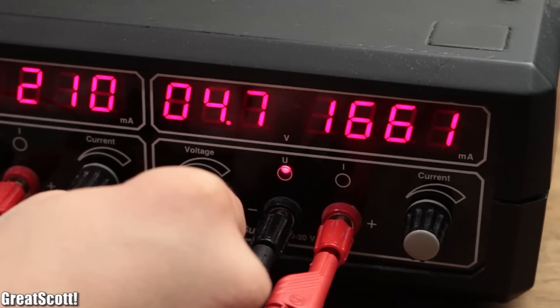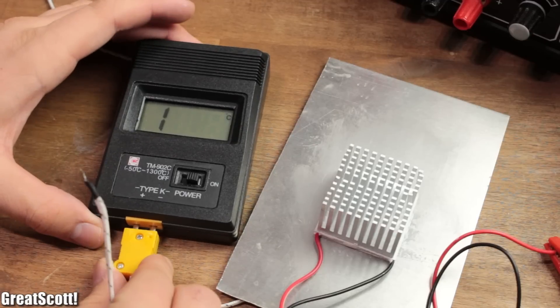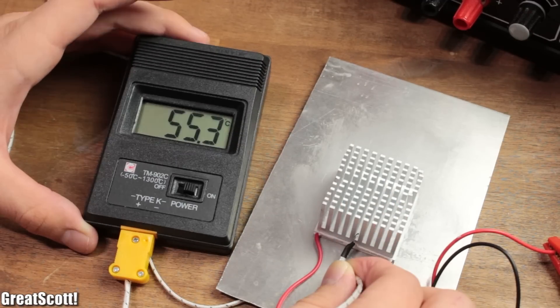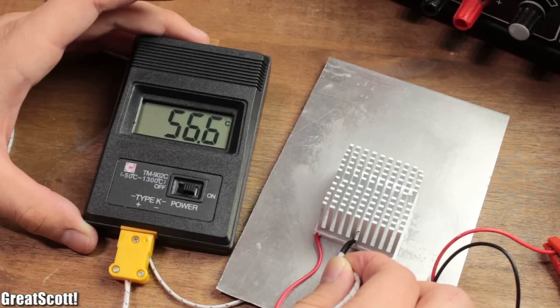As I was playing around with it at a voltage of 5 volts, I realized that the heatsink on the hot side was certainly too small because it reached a temperature of around 55 degrees.